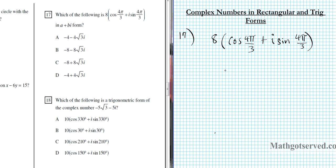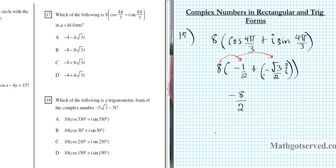So we're going to have 8 times cosine 4π/3, which is negative 1/2, plus i times sine 4π/3, which is negative root 3 over 2. Now we're going to distribute this 8 to both terms. That gives us negative 8/2 plus i times negative 8 root 3 over 2, which simplifies to negative 4 minus 4 root 3 i. So this is the rectangular form, and our answer is option letter A.